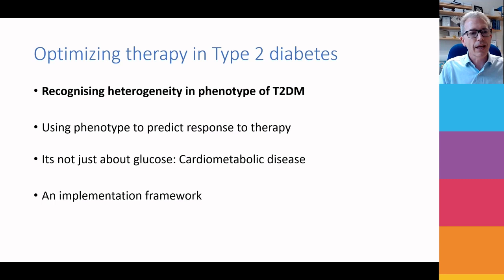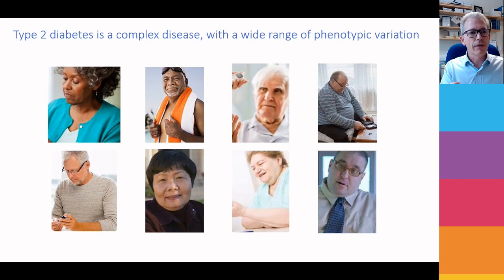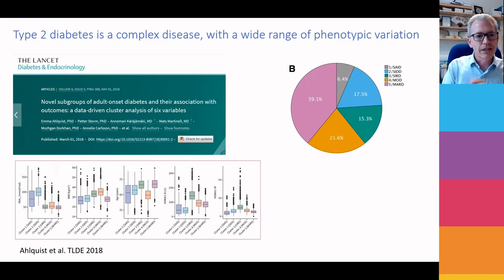So, heterogeneity of type 2 diabetes. What I love about the treatment of type 2 diabetes is that every patient that comes through the door is different. That's largely because it's a diagnosis of exclusion — we rule out type 1 diabetes and pretty much everyone left has got type 2 diabetes. And yet, etiologically, they're very different, and yet we treat them all the same.